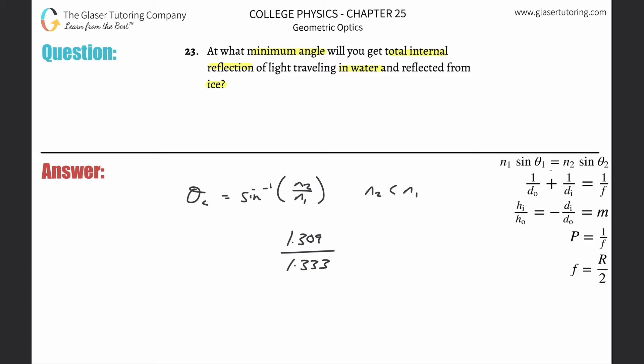That's also what it's kind of saying. It's saying from water and reflected from ice, so it's going from the water into the ice, essentially. So the refracted ray would have been in the ice. That's why that's on top. And the water is the incident part. That's why that's on the bottom. And that'll also make sense if you take a look at number 20.